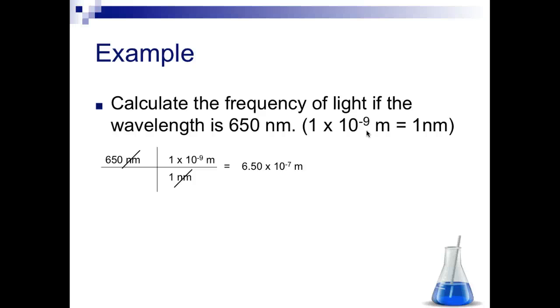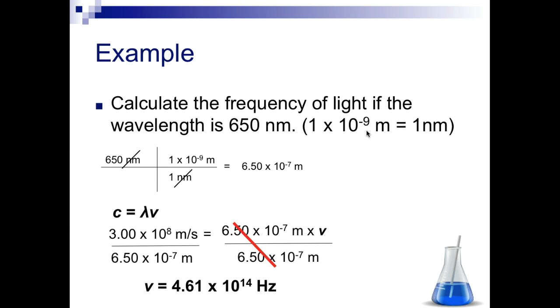So now that we have a wavelength in meters, we can plug it into our equation. So c equals lambda nu. So the speed of light is equal to our wavelength times frequency. We have to solve for frequency. So again, divide each side by our wavelength, and we get a frequency of 4.61 times 10 to the 14th.